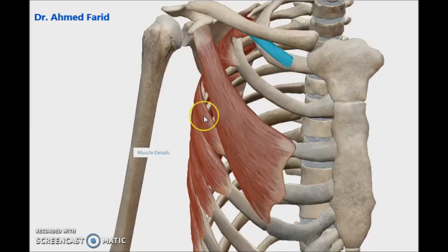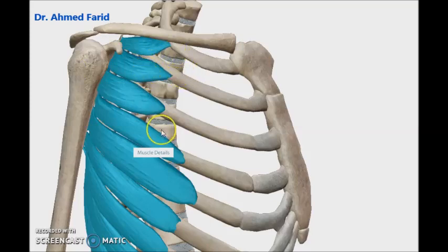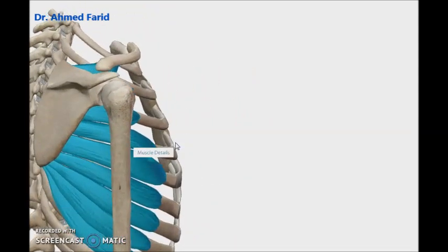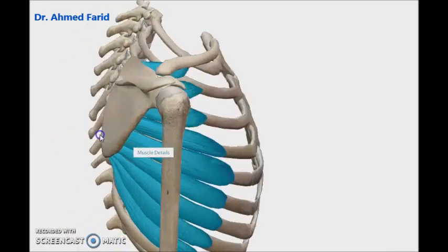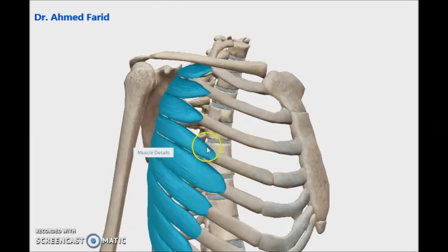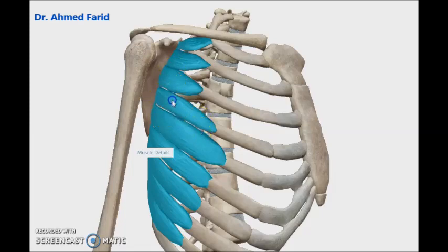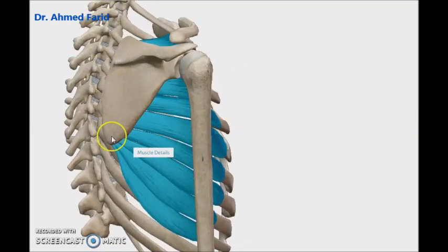Lastly, we will discuss serratus anterior. It takes origin from the lateral aspect of the upper eight ribs — one through eight — and goes to be inserted into the front of the scapula. The muscle originates from the lateral aspect of the upper eight or nine ribs, goes around the ribs, and enters between the ribs and scapula to be inserted into the front of the medial border of the scapula.